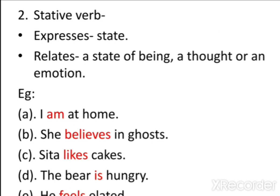Stative verb: a stative verb expresses a state rather than an action. It typically relates to a state of being, a thought, or an emotion. 'I am at home' — 'am' is not an activity, it's a state. 'She believes in ghosts' — 'believes' is not an activity, it's an opinion. 'Sita likes cake' — 'likes' is not an action, it's a state. 'The bear is hungry' — 'is' is not an activity, it's a state. 'He feels elated' — 'feels' is not an activity, it's an emotion.